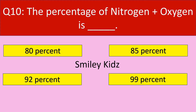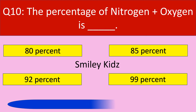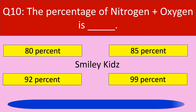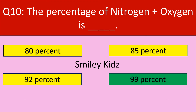Moving to the last question, number 10. The percentage of nitrogen plus oxygen is — your options are 80%, 85%, 92%, 99%. The correct answer is 99%. The percentage of nitrogen plus oxygen is 99% in air.